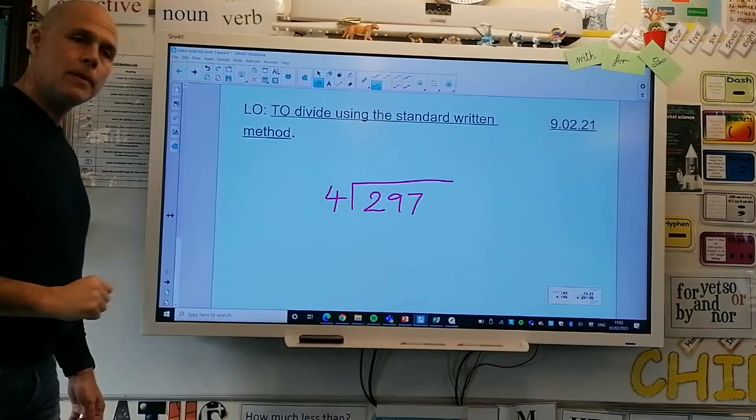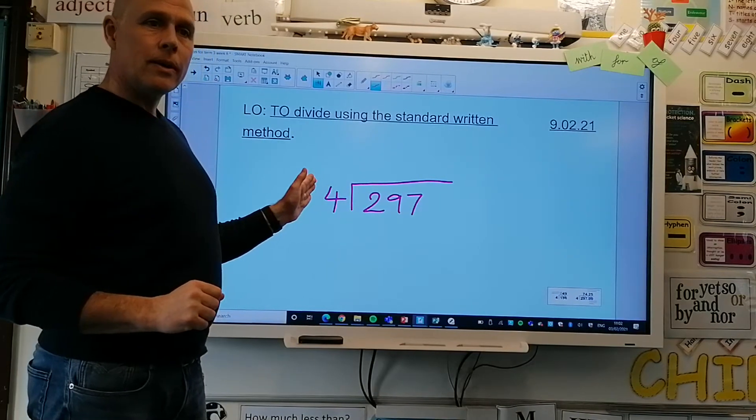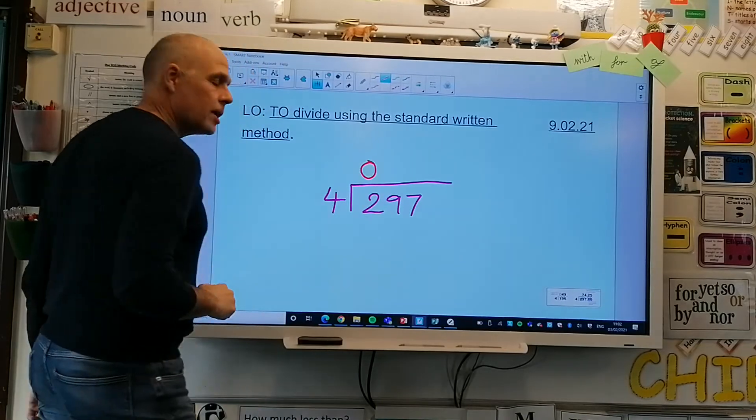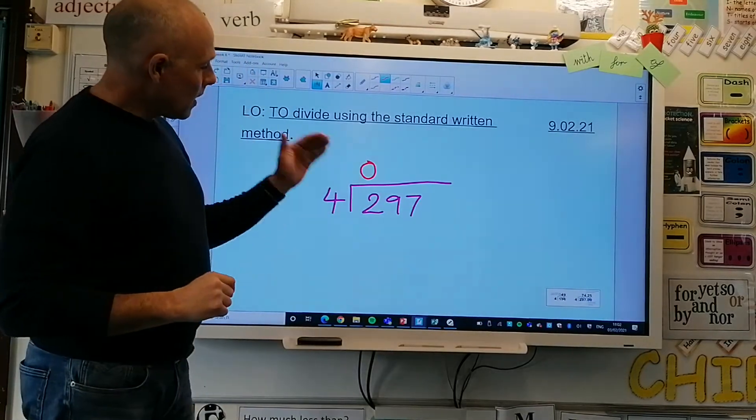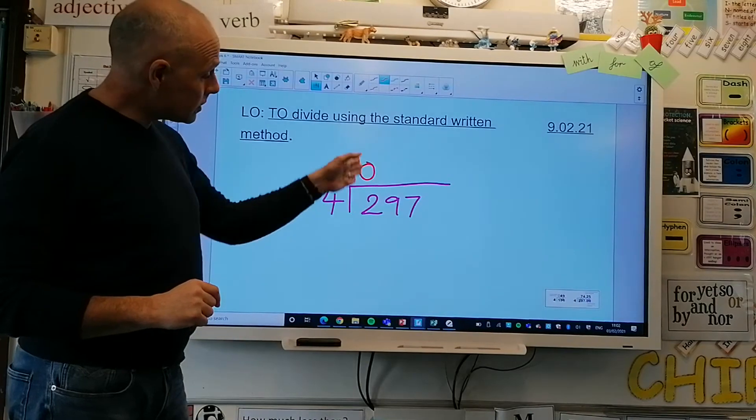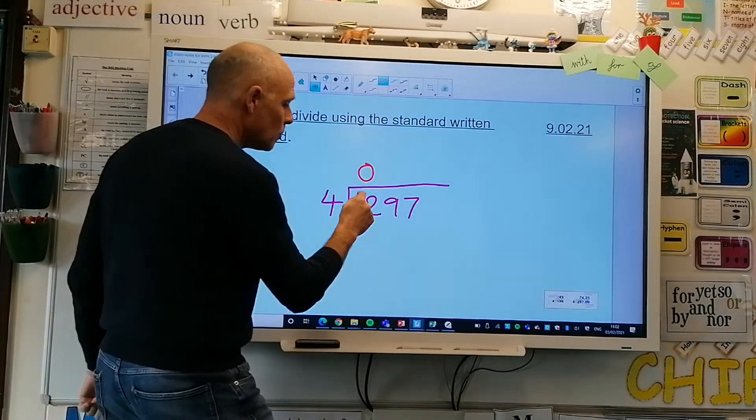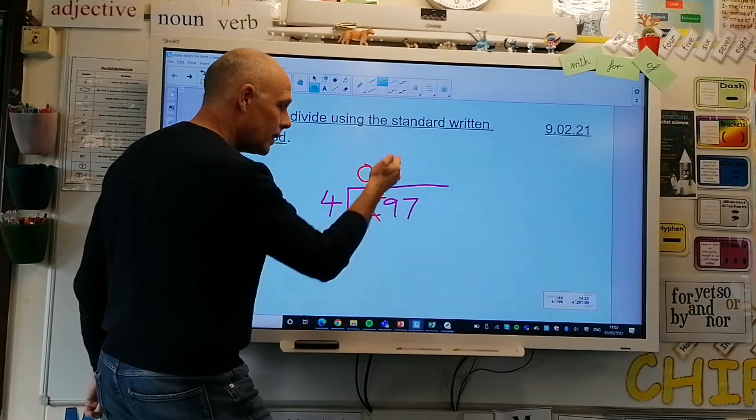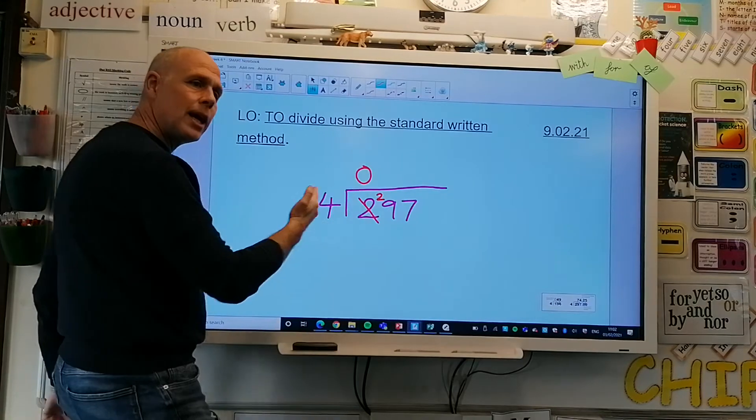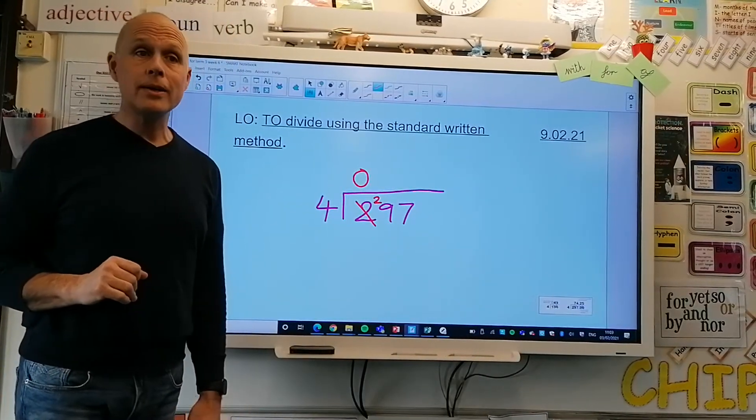So I've got 297, oh different color, love it, and we're dividing by 4. Two shared between 4, can I do it? No, no. So what I'm going to do, I'm going to put a big fat zero above the 2 there, which means I've still got that 2, 2 hundreds, and I'm going to exchange them for 20. Brilliant, 20 in the next column. I've now got 29 that I need to share equally between 4.